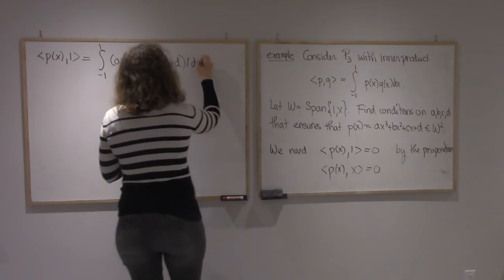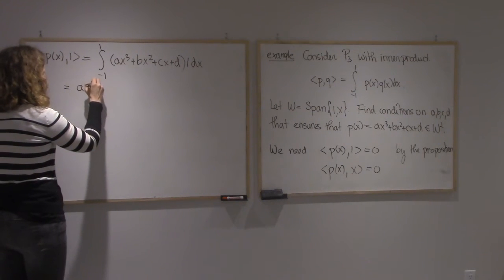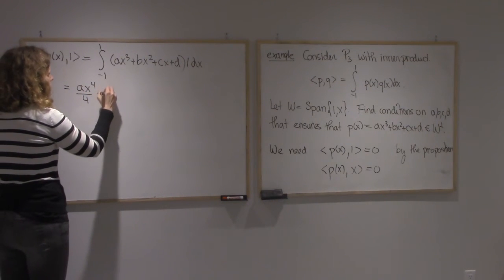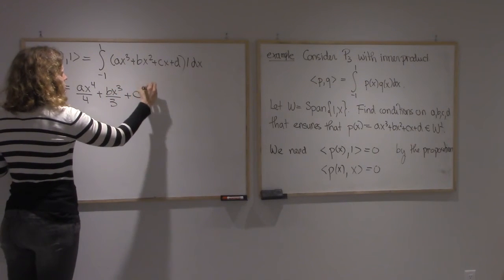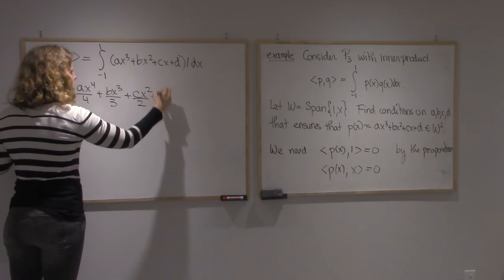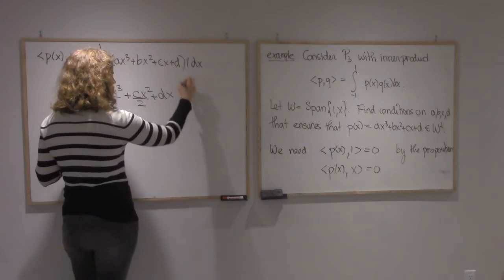So I get Ax⁴/4 + Bx³/3 + Cx²/2 + Dx. That's the integral. Now I need to plug in minus 1 and 1.